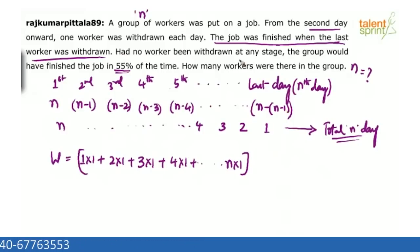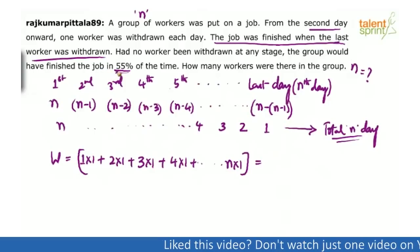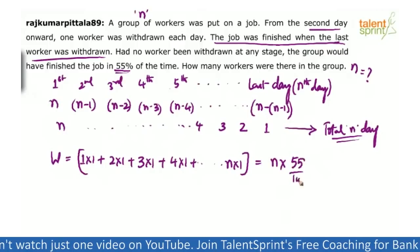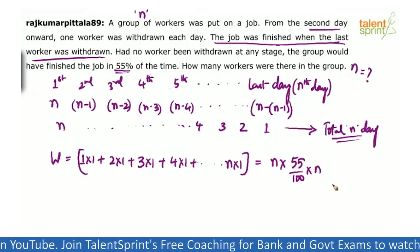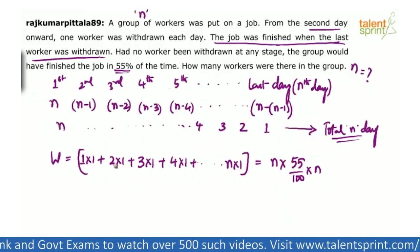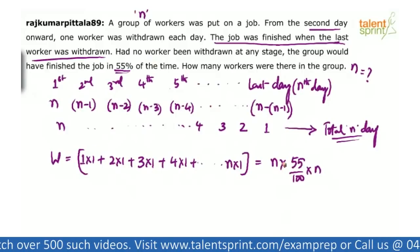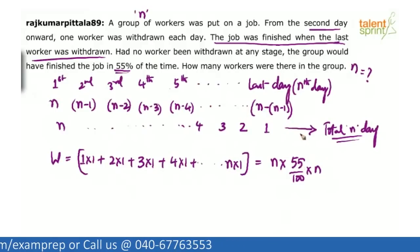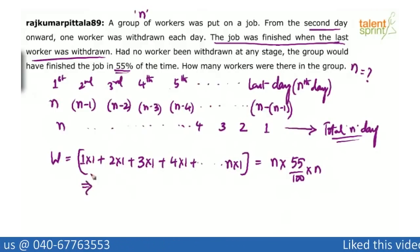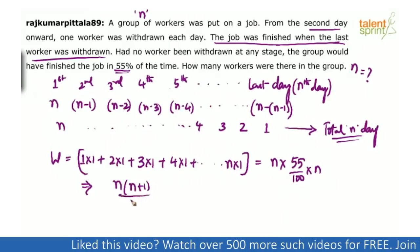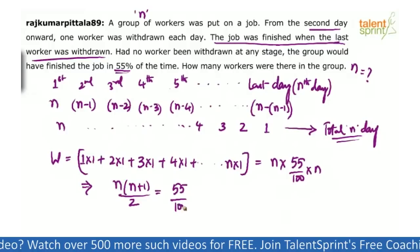If no worker was withdrawn, n persons work for 55% of n days. So n men working for 55/100 × n days. Setting up the equation: the left-hand side is 1 + 2 + 3 + ... + n, which equals n(n+1)/2. This equals 55/100 × n squared, which is 11/20 × n squared.